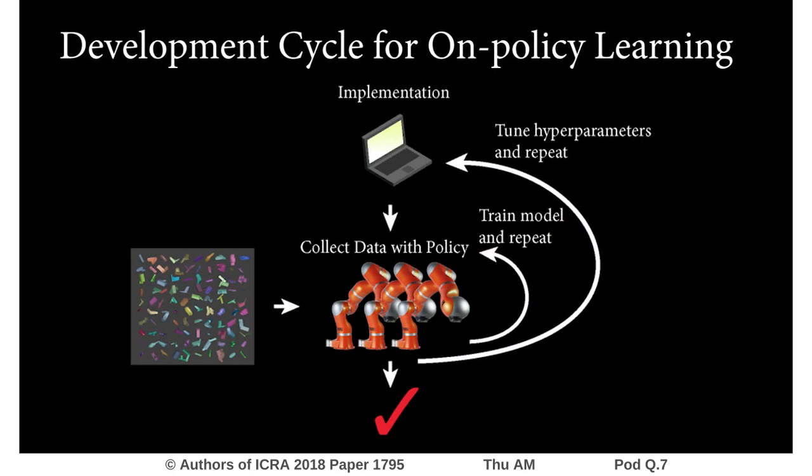Furthermore, if an on-policy algorithm fails to learn, all of the data collected by the policy is thrown away. This can be sample inefficient and impractical in real-world robotic settings where data collection is expensive.